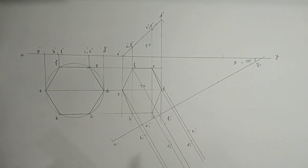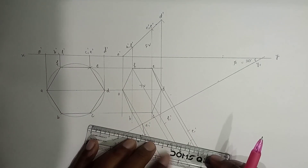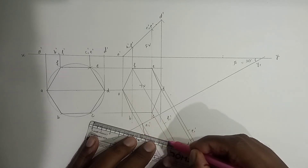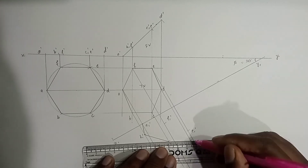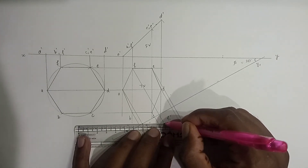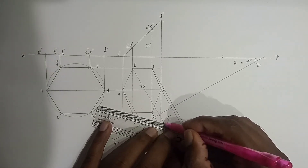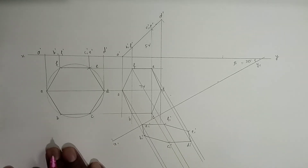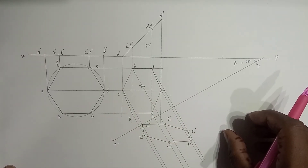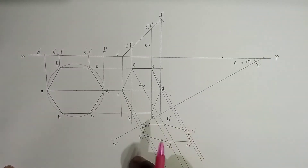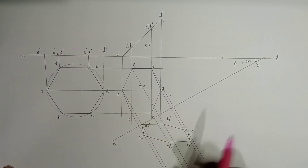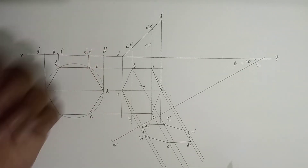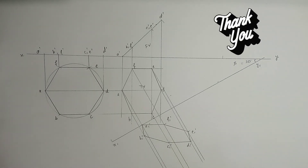Now we connect the points with the help of a scale to get the required projection. This is how the auxiliary method helps you get the projection. You can also use the general method with stage 1, stage 2, and stage 3. If the plane is inclined to HP, you get an auxiliary front view; if inclined the other way, it is an IP and gives an auxiliary top view. Thank you dear students — I hope you are clear with the concept. Have a good day.